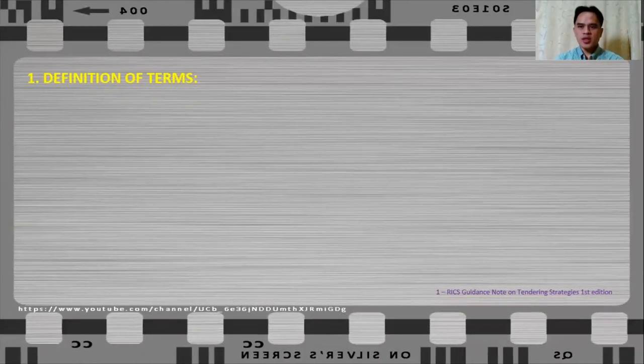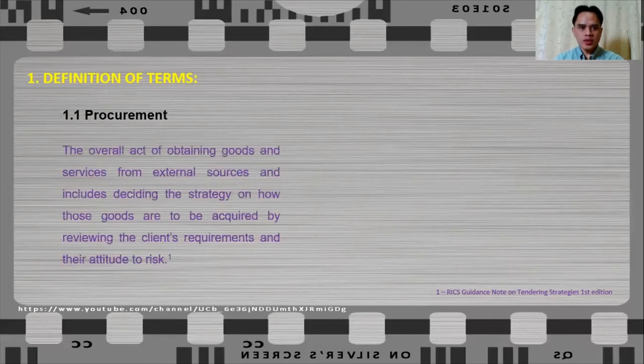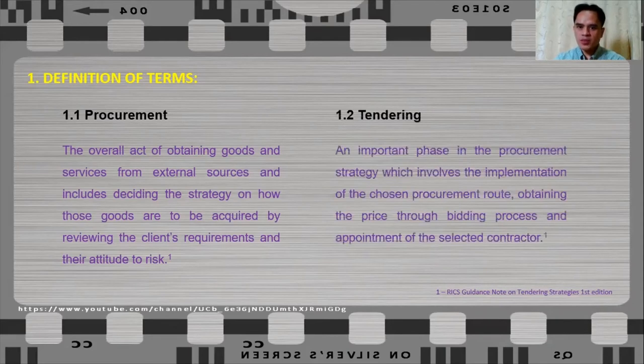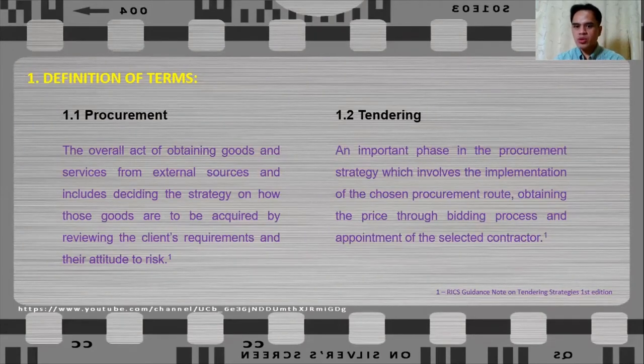Let us begin by defining what is procurement. Procurement is the overall act of obtaining goods and services from external sources and includes deciding the strategy on how those goods are to be acquired by reviewing the client's requirements and their attitude to risk or their client's risk appetite. While tendering is an important phase in procurement strategy, which involves the implementation of the chosen procurement route, obtaining price through bidding process, and appointment of selected contractor.